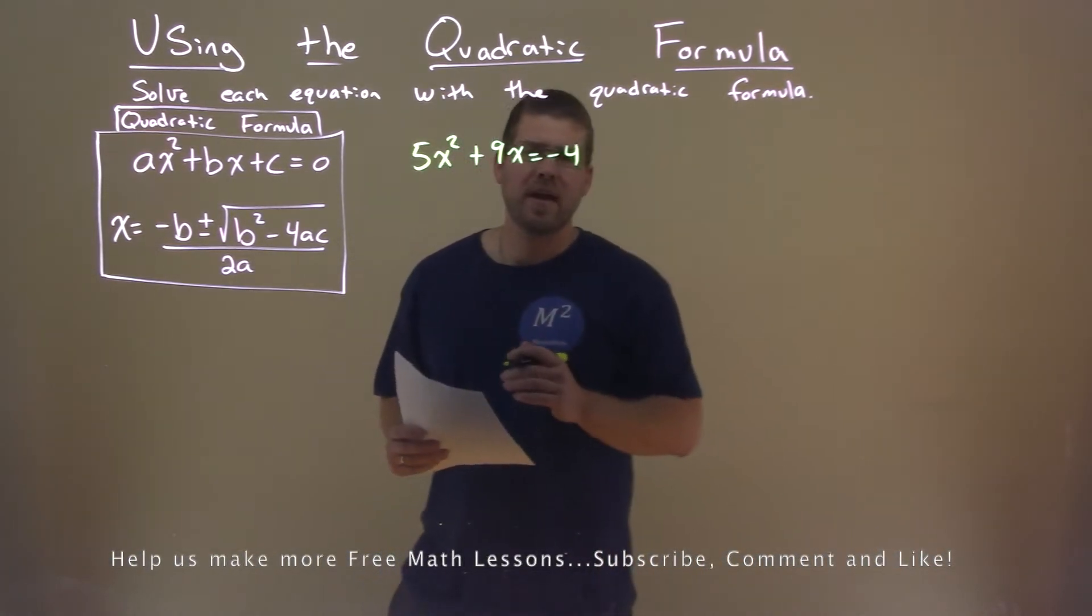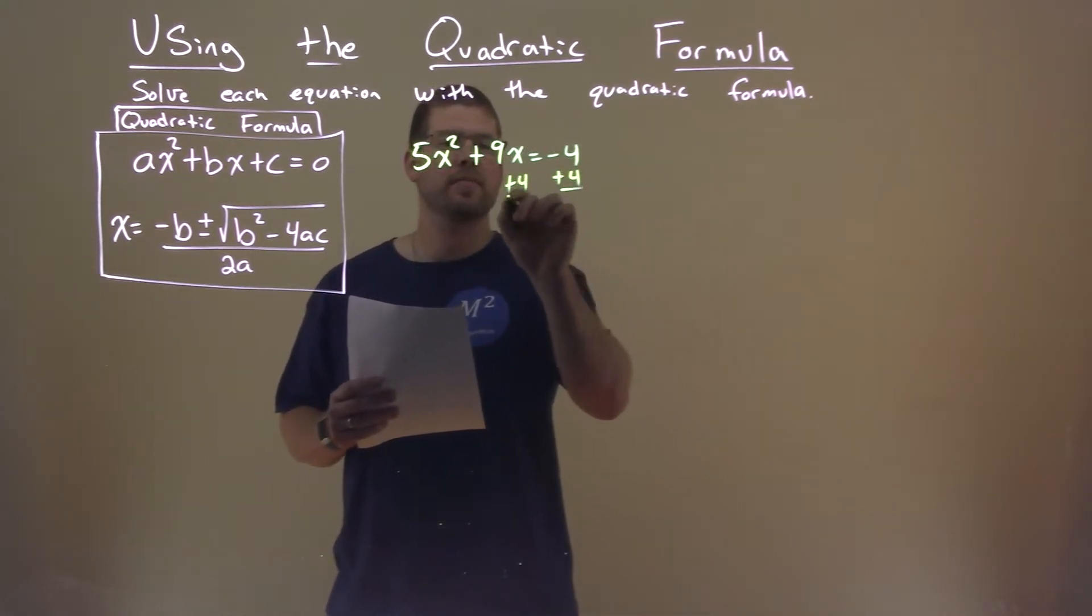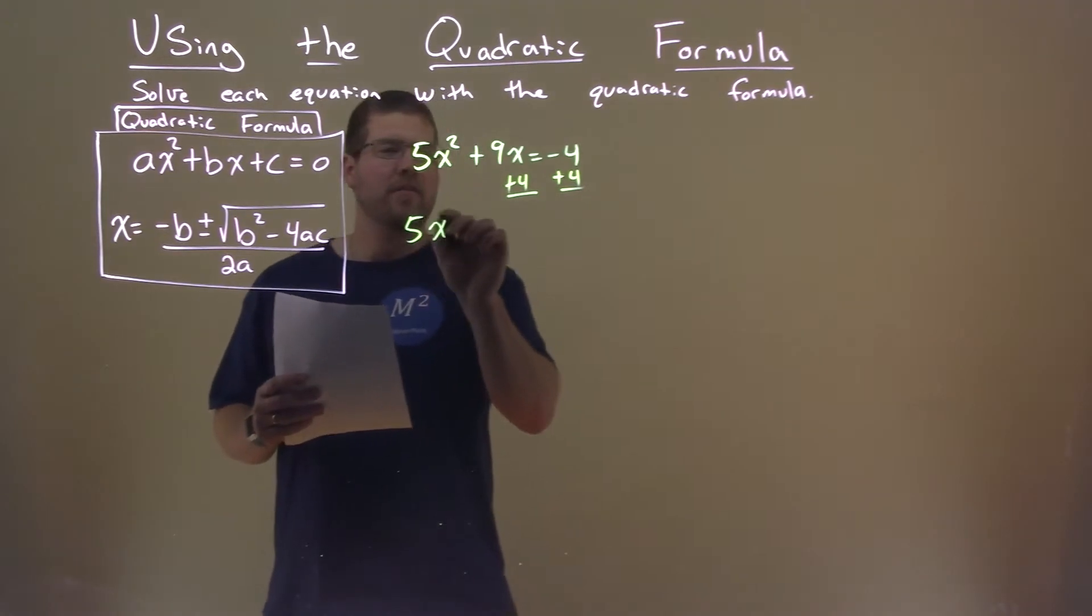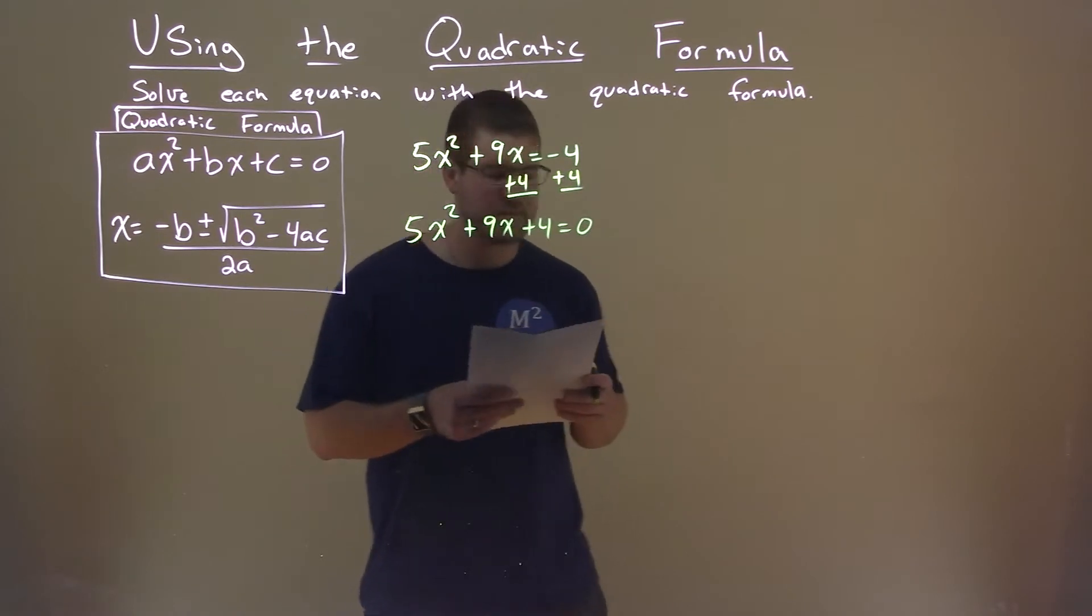We have to get our equation equal to 0 first, so I'm going to add 4 to both sides. That gives us 5x squared plus 9x plus 4 equals 0.